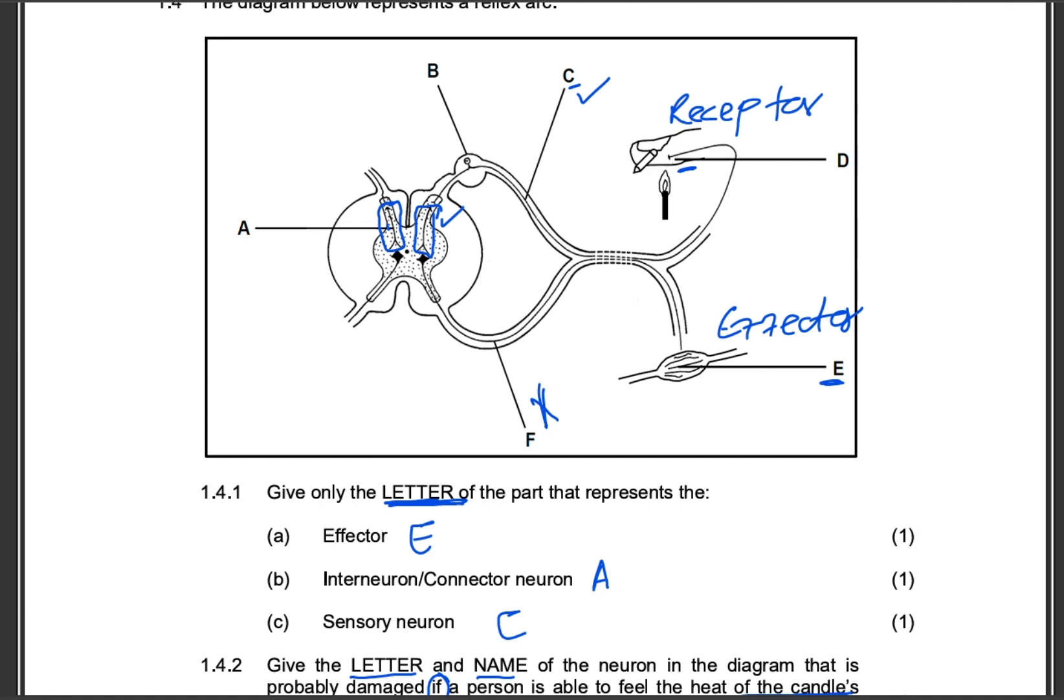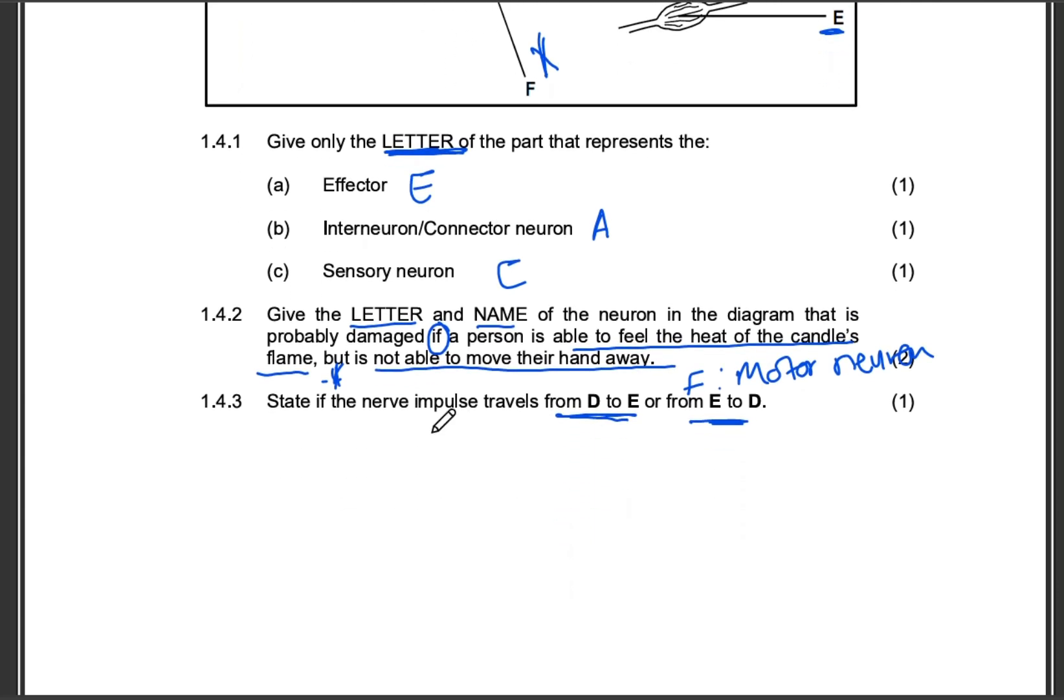D, receptor, that's where we start. We receive the stimulus, the change in the environment, which is the heat here, and the impulses will be transmitted through the sensory connector motor. So it's D to E, easy peasy.